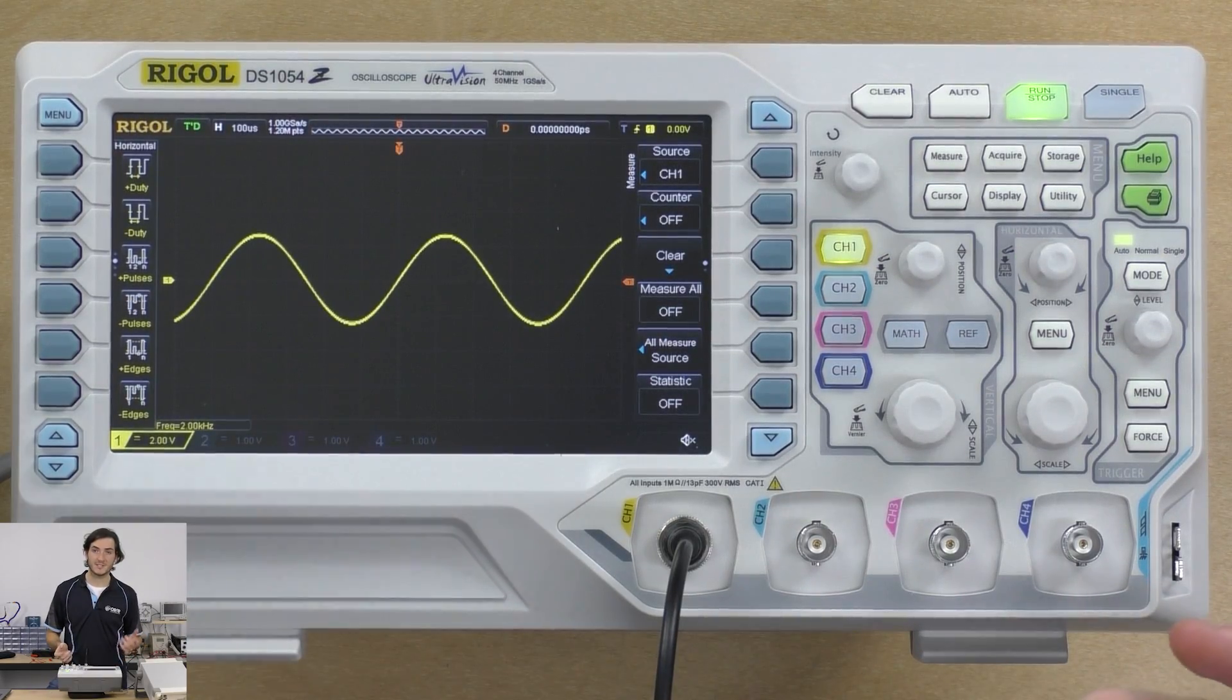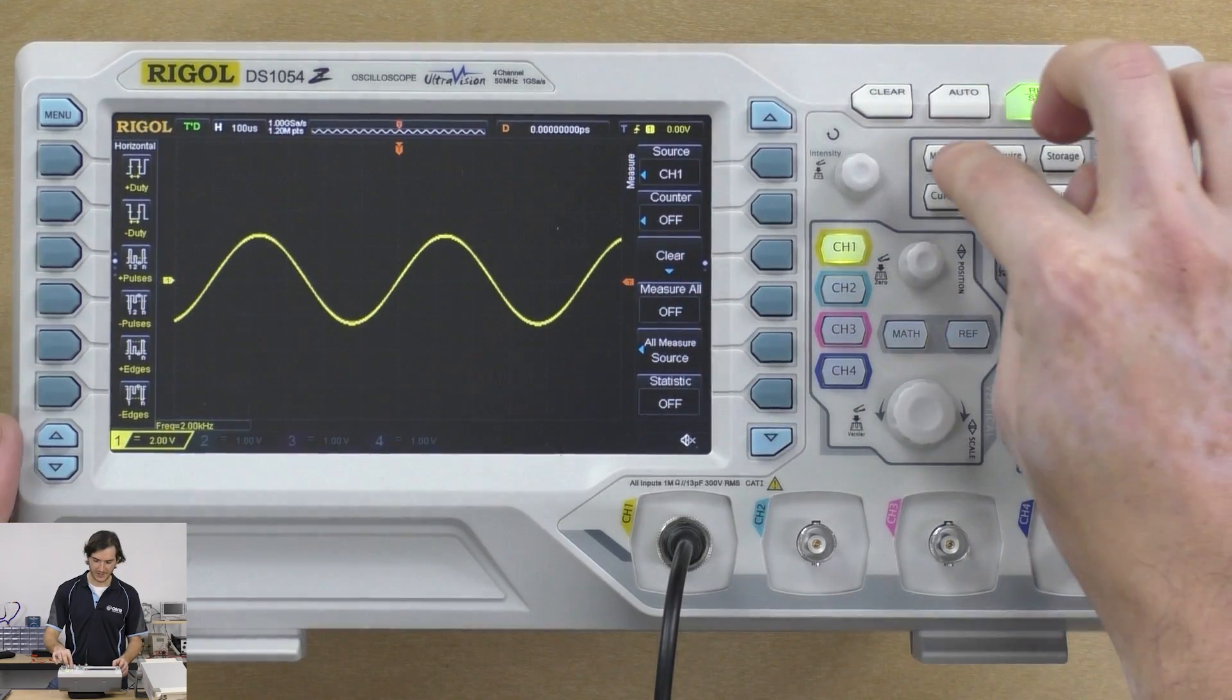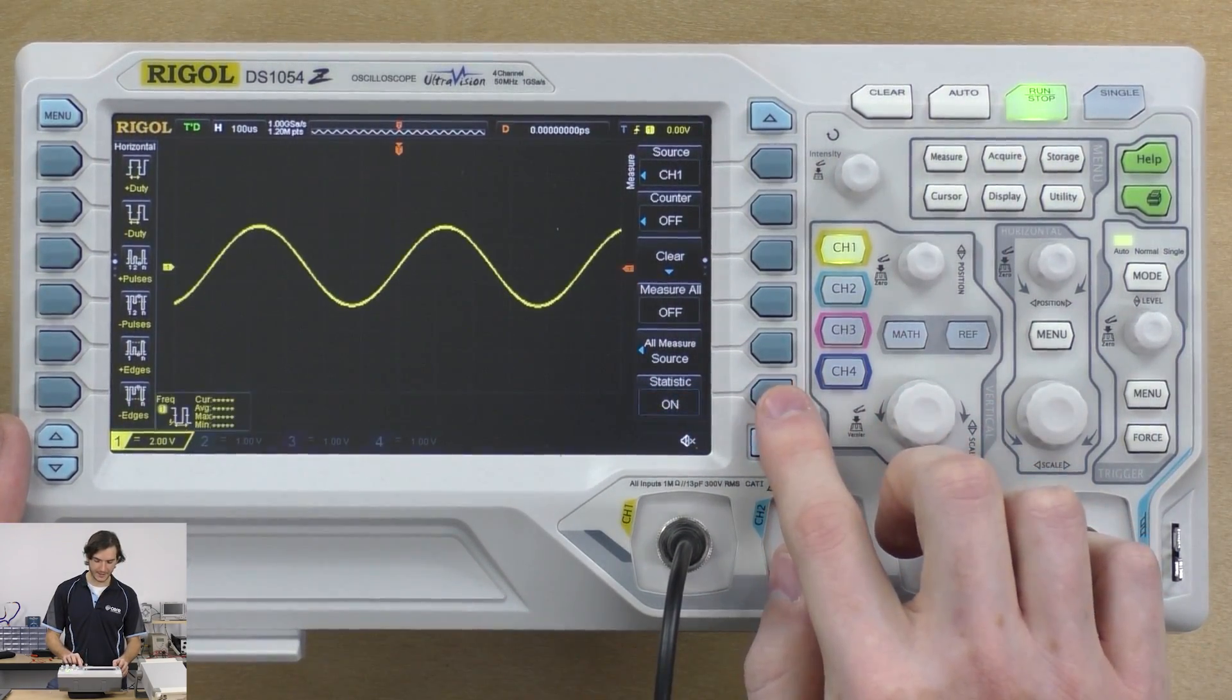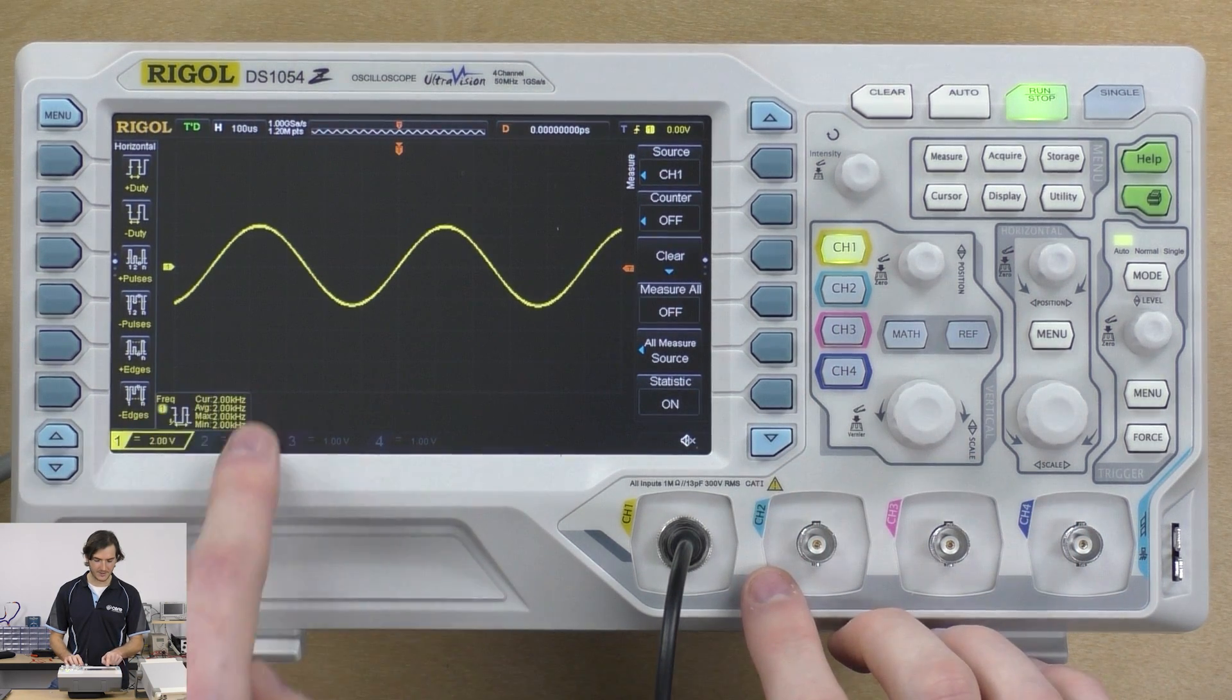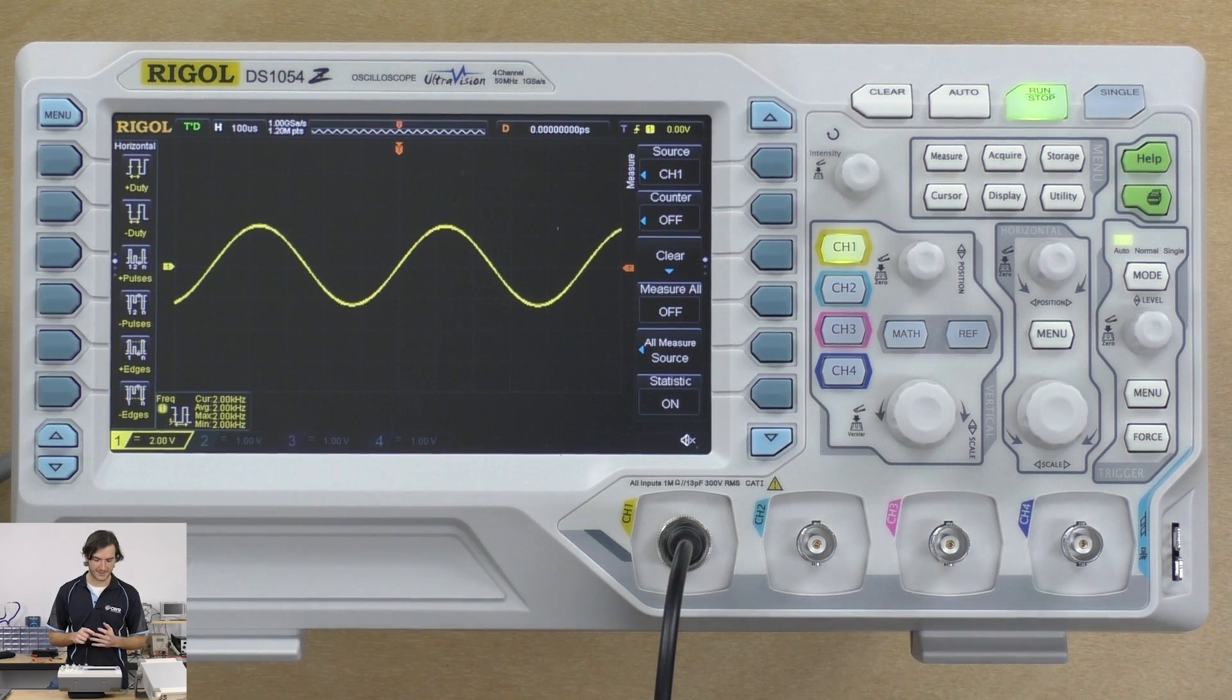If we wanted to extract a little more data we could bring up the statistic option on the right-hand side. If we enable that we now have this frequency measurement flushed out with a little bit more information: the current, the average, the max and the min.